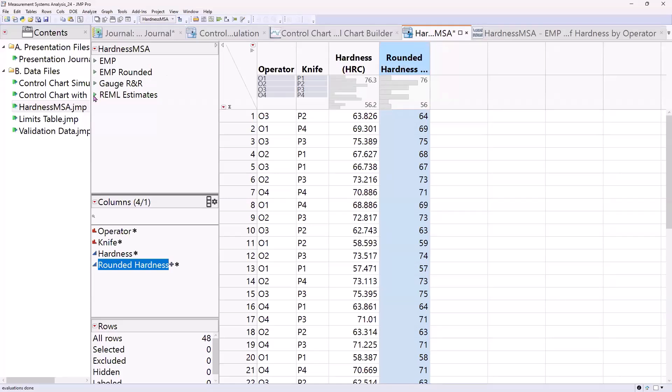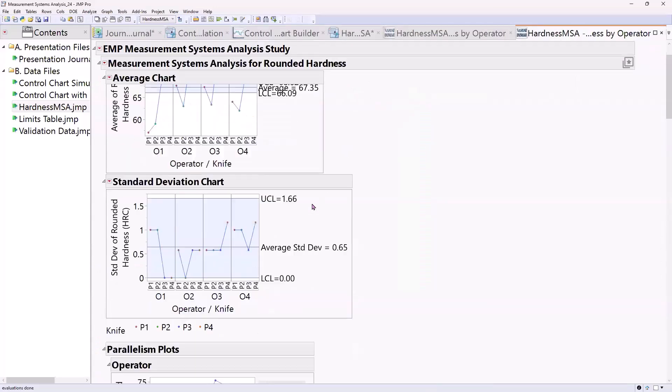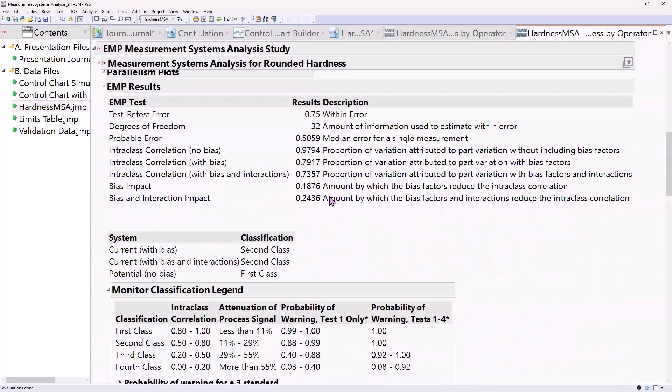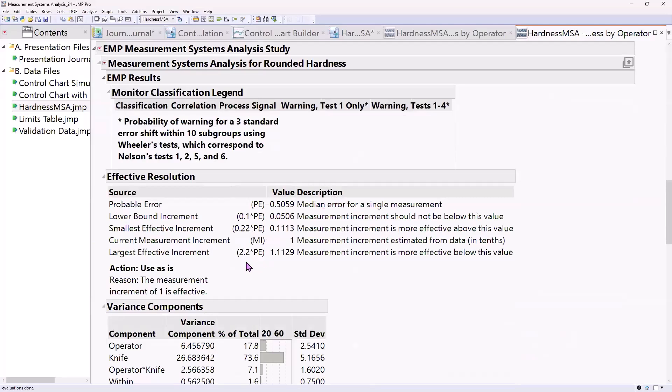Now, I would rerun the EMP report on that rounded measure and then relook at my effective resolution and say, okay, that's good. Now, when I report the precision of that hardness data, that is the precision level that I should be reporting. And I won't be misleading anybody by any decimal points beyond what's absolutely effective.